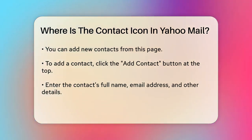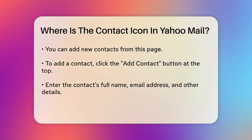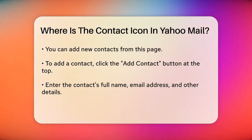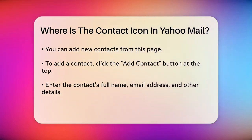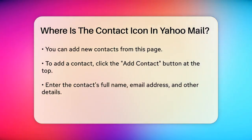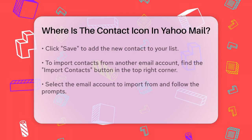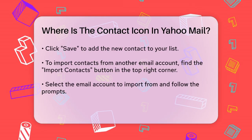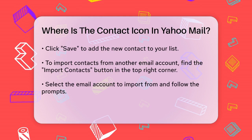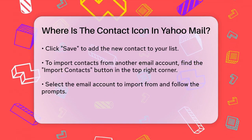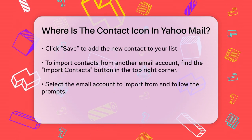To add a new contact, click on the Add Contact button, which is typically located at the top of the page. You'll then need to enter the contact's full name, email address, and any other details you want to include. Once you've filled in the information, just click Save to add the contact to your list.